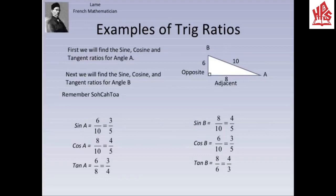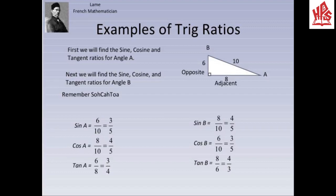Let's take an example for better understanding. We have triangle ABC where AB is the hypotenuse of 10 units, and the other two sides BC and AC are 6 and 8 units respectively. First, we will find the sine, cosine, and tangent ratios for angle A. For angle A, BC is the opposite side and AC is the adjacent side. Sine of angle A is opposite over hypotenuse, that is 6 over 10, which simplifies to 3 over 5. Cosine of angle A is adjacent over hypotenuse, that is 8 over 10, which simplifies to 4 over 5. Tangent of angle A is opposite over adjacent, that is 6 over 8, which simplifies to 3 over 4.